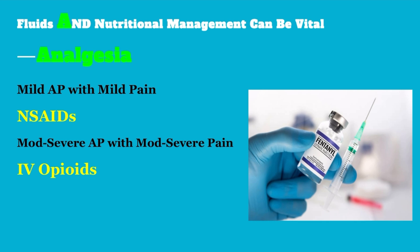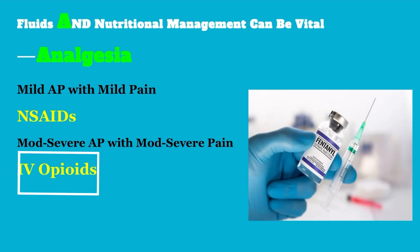A is for analgesia. If the patient has mild acute pancreatitis with mild abdominal pain, NSAIDs can be used. But most patients have moderate to severe pain or moderate to severe acute pancreatitis, so those patients need IV opioids like IV fentanyl or IV dilaudid. If the patient also has kidney issues, IV fentanyl is preferred.